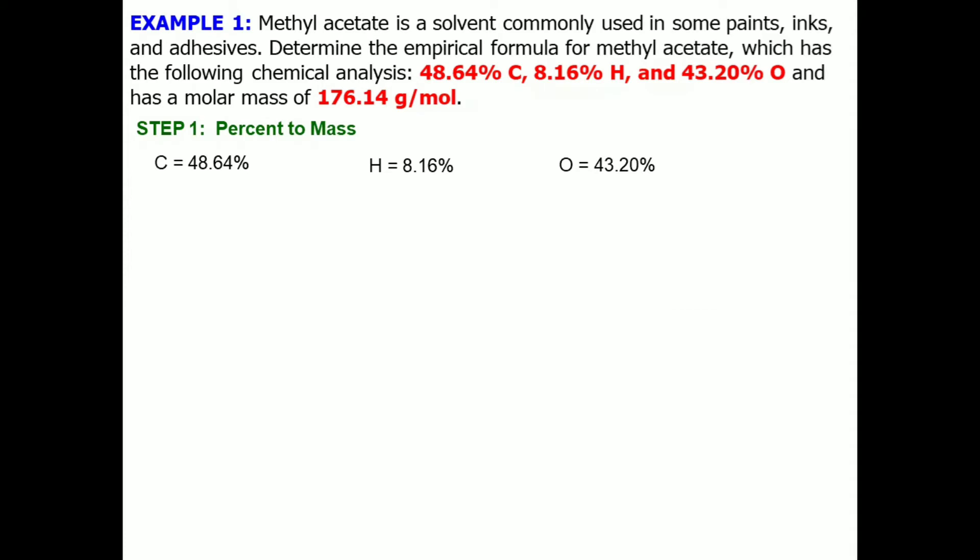So, we just list down all the percentages of carbon, hydrogen, and oxygen. Then, an assumption that the sample is 100 grams. So, therefore, all of this are equal to their respective grams or masses.